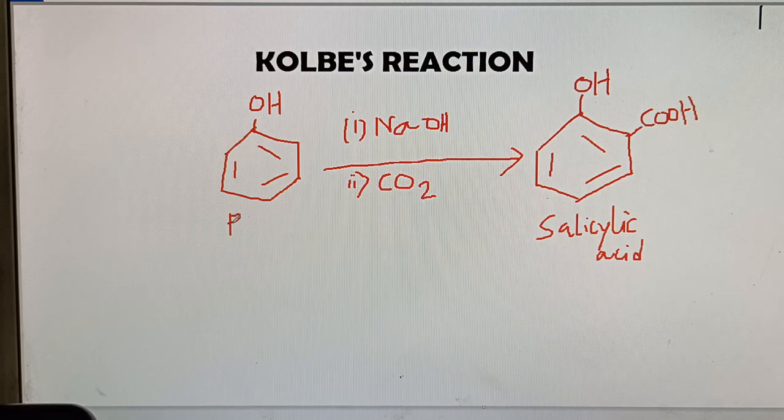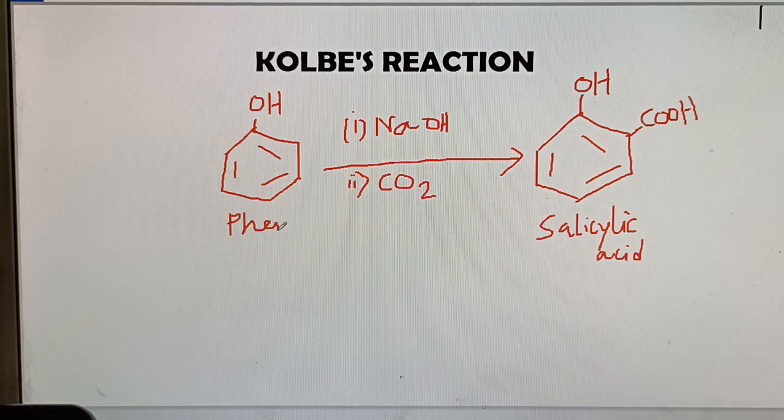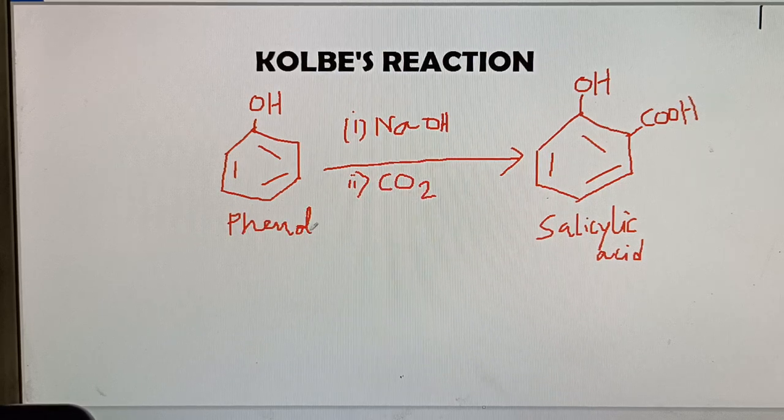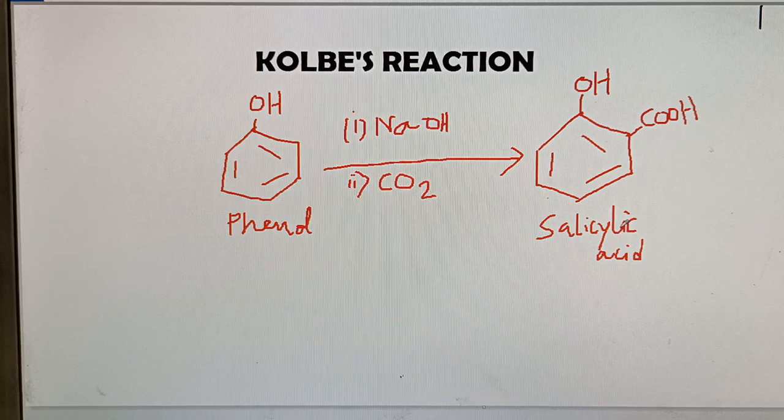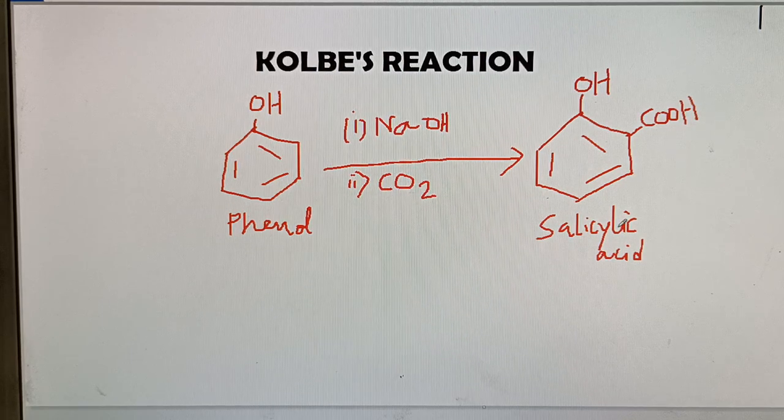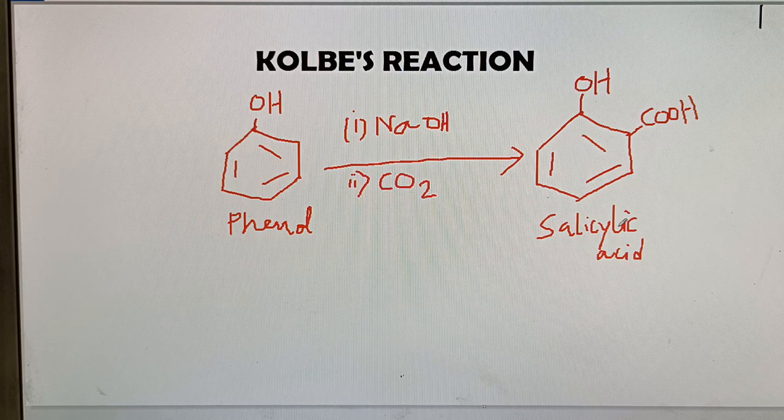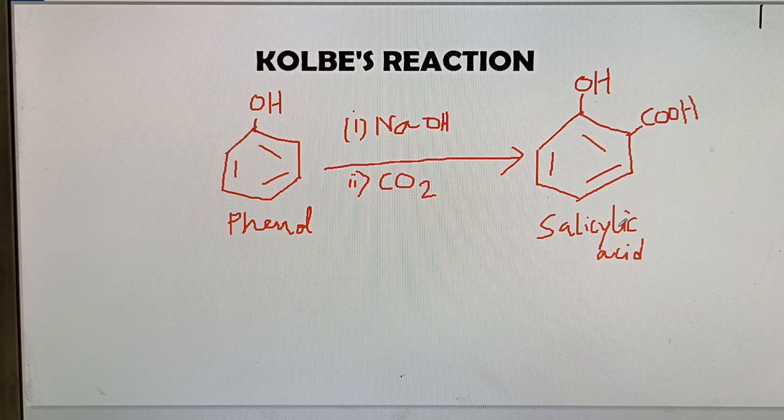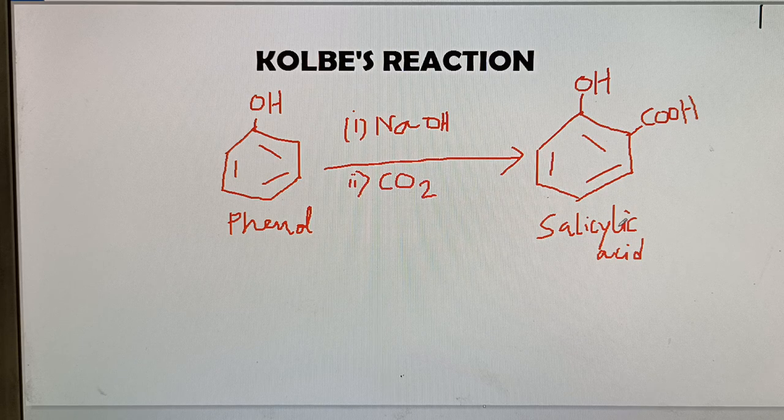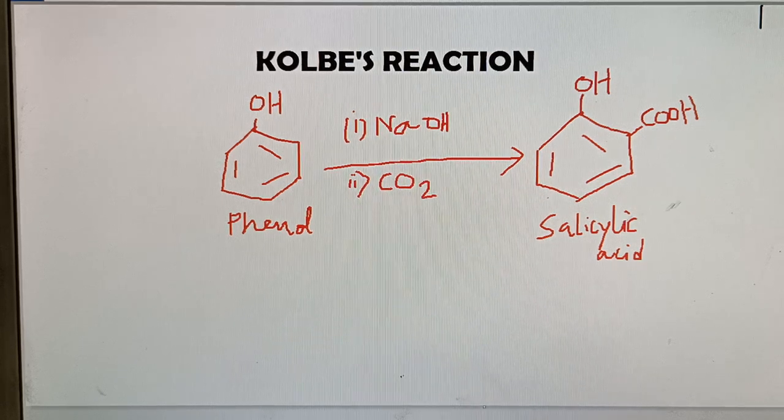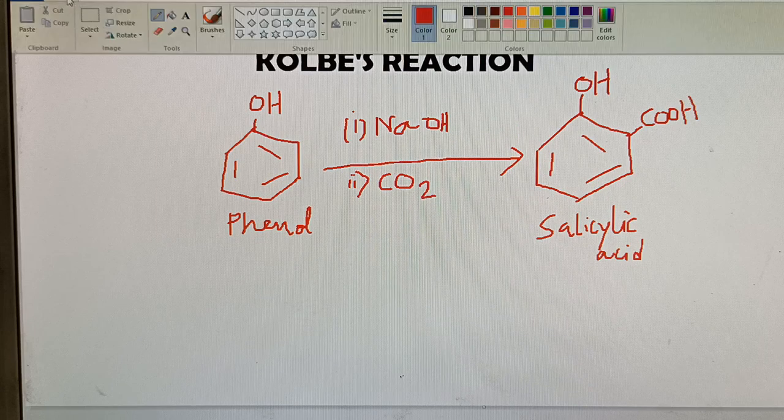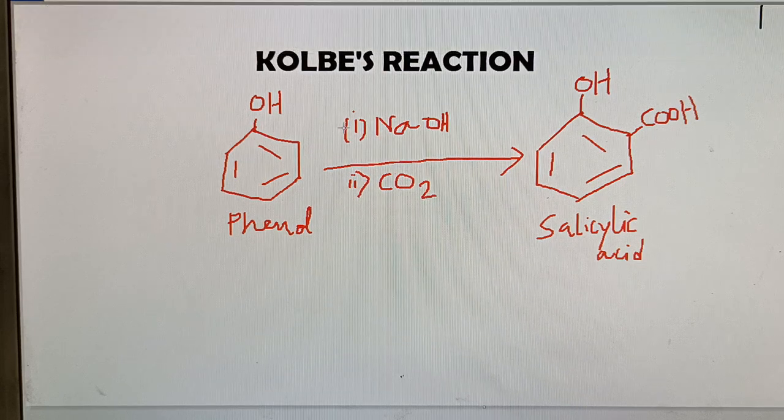This is phenol and this is salicylic acid. Phenol can be converted to salicylic acid by the reaction with base and carbon dioxide. Let us see the mechanism of this important reaction.